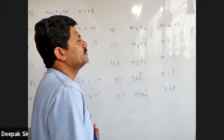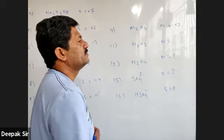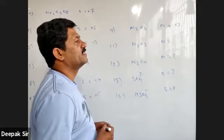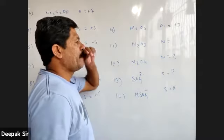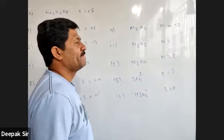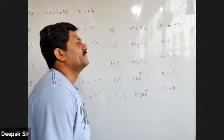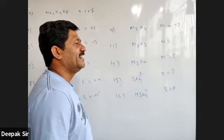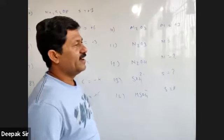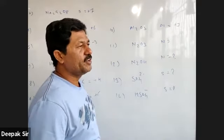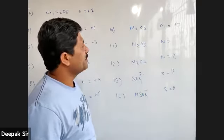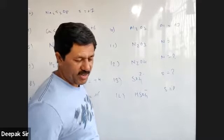A student raises a doubt: sir, I found this case difficult. I found that nitrogen has oxidation number plus three, but it should be minus three because it is a non-metal. Is that a valid question? Let's hear what others think.